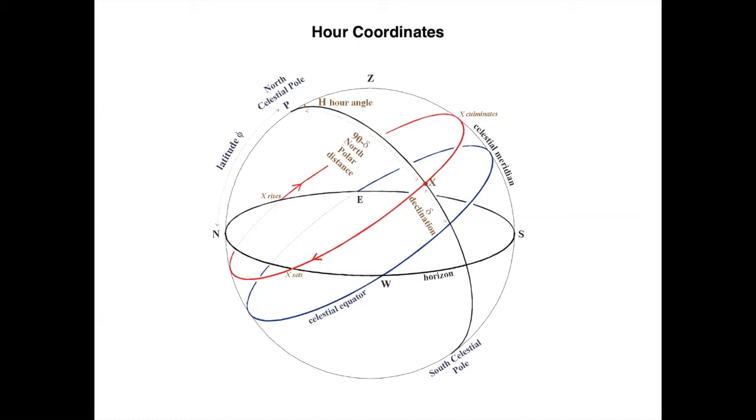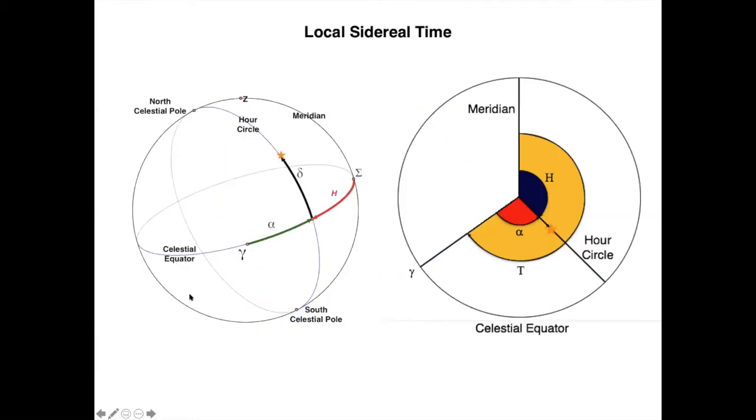Related to the definition of hour angle is the definition of the local sidereal time. Sidereal means with respect to the stars, comes from the Latin sidus, meaning star. A sidereal period refers to the time taken to return into the same position with respect to the distant stars.